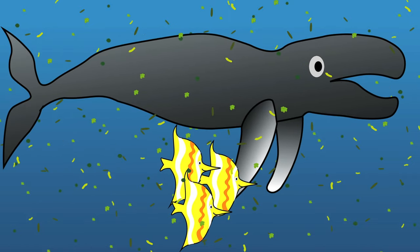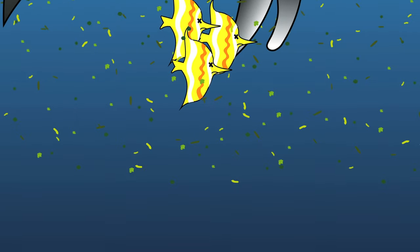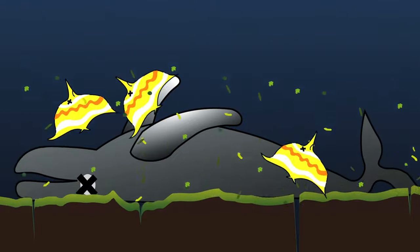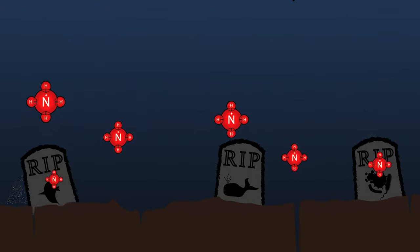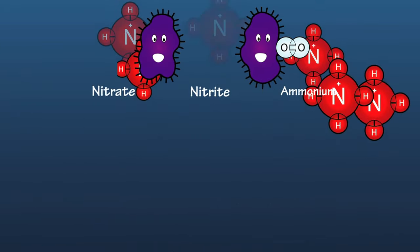Eventually, both the plankton and the animals will die and sink to the ocean floor, where they will be decomposed by bacteria into ammonium for continued use in the cycle.